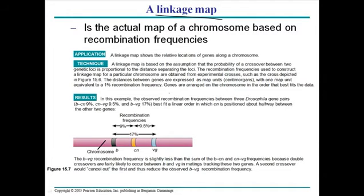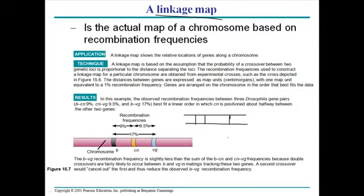A linkage map is simply a genetic map. A genetic map is a representation of genes at different loci on DNA or on a chromosome. On a chromosome we have different genes — gene 1, gene 2, gene 3. In eukaryotic cells we have lots of non-coding junk DNA in chromosomes that does not function as a gene or encode proteins, and within those chromosomes we have genes separated from each other by different nucleotide sequences.